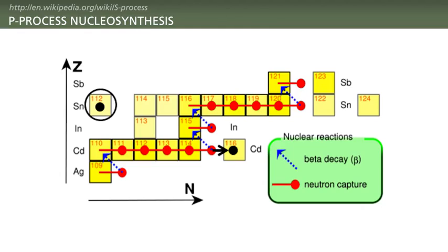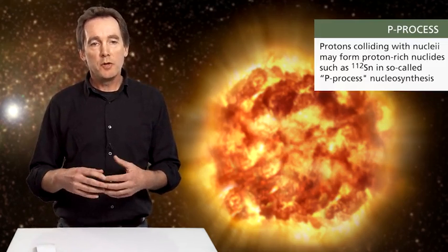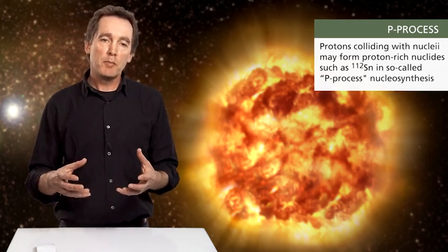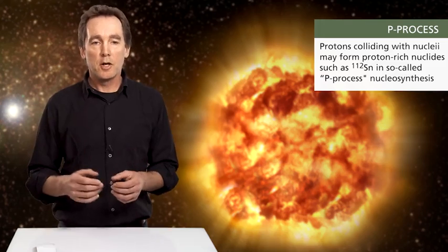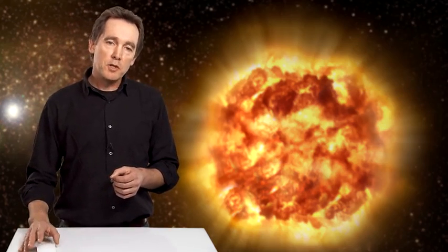So we have S process nucleosynthesis and R process nucleosynthesis and what we haven't explained is elements that lie on the left side of the diagram or isotopes like TIN112 here in this diagram in which you have proton rich or neutron poor nuclei and those are formed by process of so called P process nucleosynthesis in which if you have free protons in stellar environments, you build up an inventory of proton rich nuclei just in the same fashion as you build up neutron rich nuclei. And as a last point here, I'll say that the very most proton rich and the very most neutron rich isotopes are those which are the rarest in nature because of the difficulty of getting past these barriers.